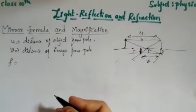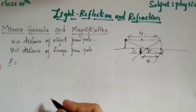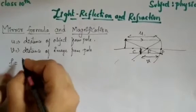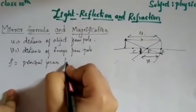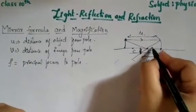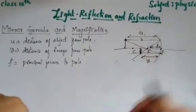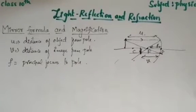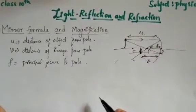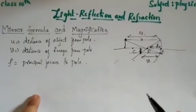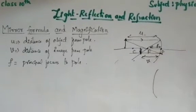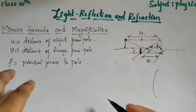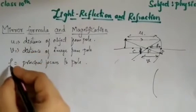These three terms — u, v, and f — are used in the mirror formula. f is the distance from the principal focus to the pole. f is positive in the case of a convex mirror, but it is always negative in the case of a concave mirror.